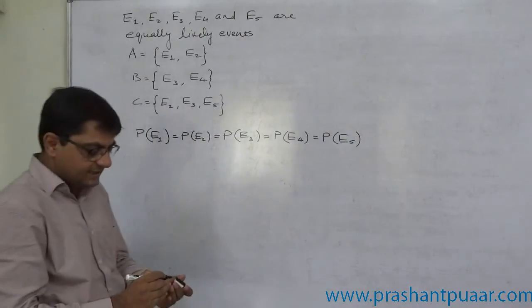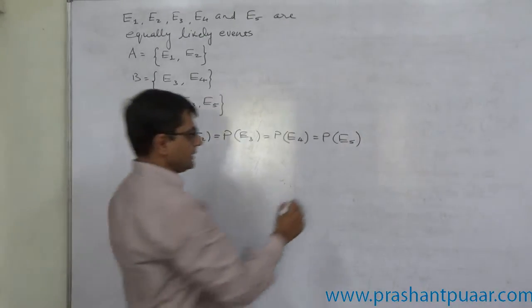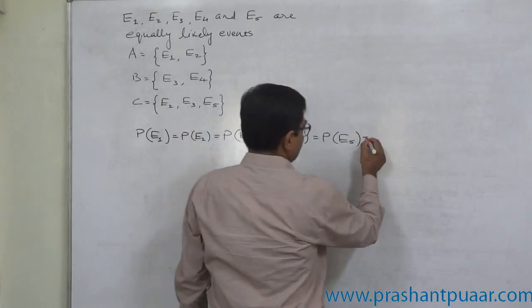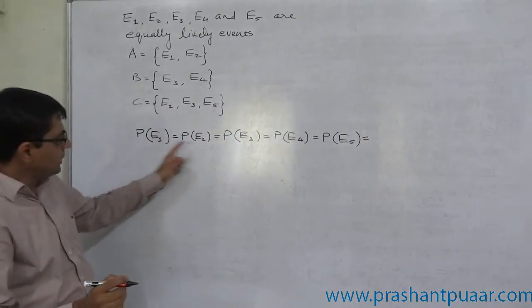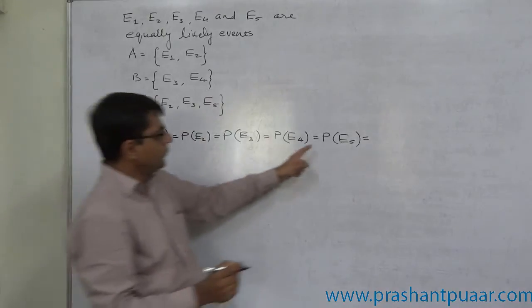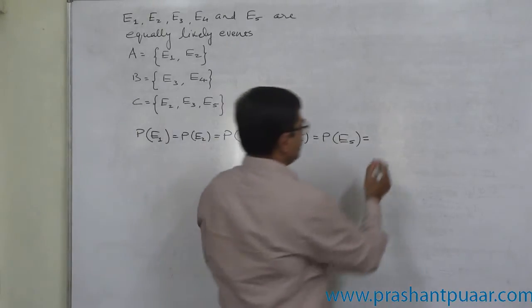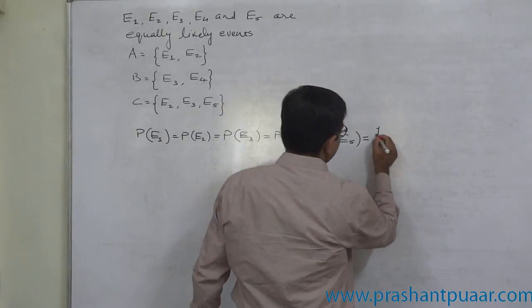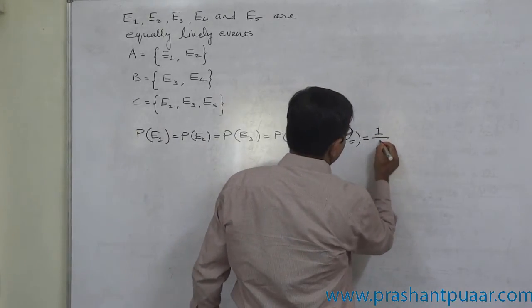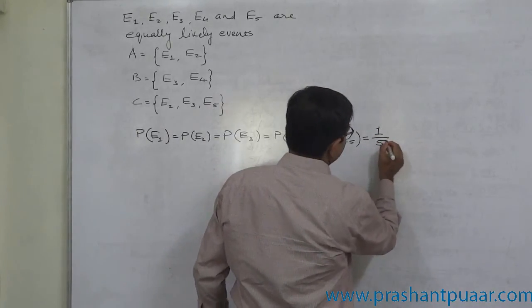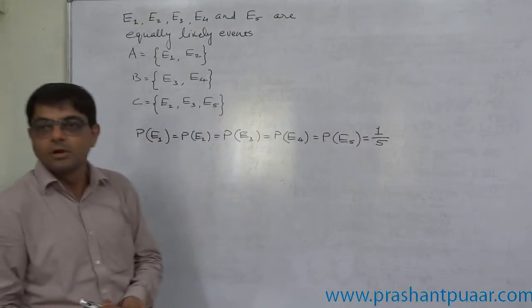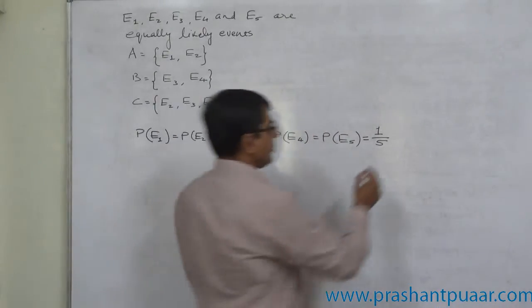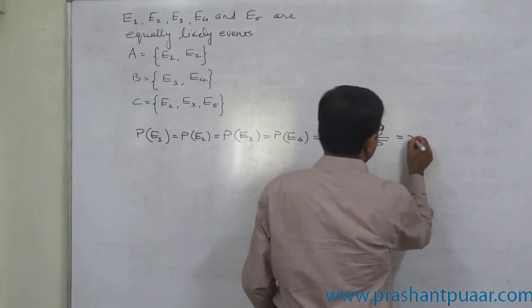Now, what is the exact probability? The number of events are 1, 2, 3, 4, 5. So the probability of any of these events is 1 by 5, or 0.2.